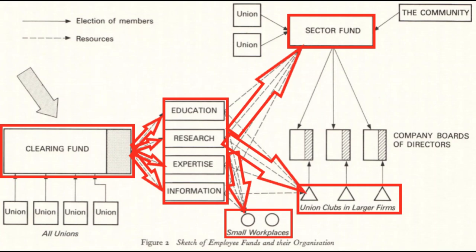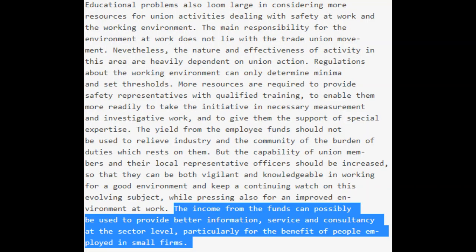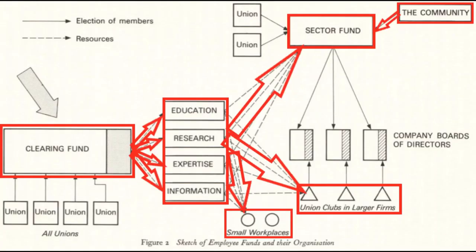One of the potential uses of the value associated with the fund — and that value would include dividends paid to the fund — would be spending it towards purchasing additional shares. However, we need to illustrate that the funds would be used to benefit general economic growth. For example, resources would go towards workplaces that would be too small to be included in the wage earner fund system, perhaps as informed by community representatives within the system. Resources would also go to unions and the sector funds for lower-level planning.